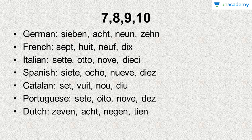In Dutch it becomes zeven — it's more towards the English 'seven' and a bit away from the German sieben. Acht, negen and tien. Zeven, acht, negen and tien. Tien looks a bit like 'ten' in English but with an E — tien.